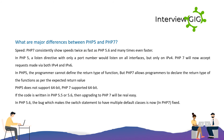What are the major differences between PHP 5 and PHP 7? Speed: PHP 7 consistently shows speeds twice as fast as PHP 5.6 and often even faster. In PHP 5, a listen directive with only a port number would listen on all interfaces but only on IPv4. PHP 7 now accepts requests via both IPv4 and IPv6. In PHP 5, programmers cannot define the return type of a function, but PHP 7 allows programmers to declare the return type of functions as per the expected return value.